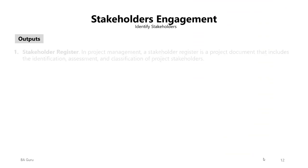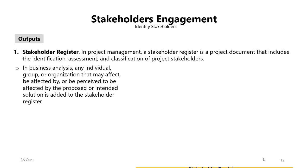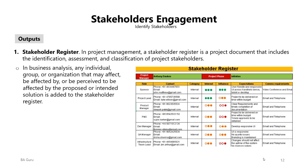The key output of this process is the stakeholders register, or product stakeholders register. In project management, the stakeholder register is a project document that includes the identification, assessment, and classification of project stakeholders. In business analysis, any individual, group, or organization that may affect, be affected by, or be perceived to be affected by the proposed solution is added to the stakeholder register. An example shows how to document the role, contact, category, interest level, influence level, expectations, and requirements.